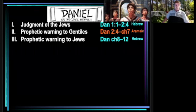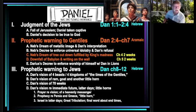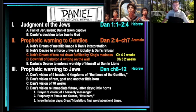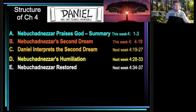We are in the red section — the prophetic warning to the Gentiles — and we are in C and D. We will do chapter 4 for two weeks and chapter 5 for two weeks. To get going this week, let's look at the structure of chapter 4. Chapter 4 also has a structure that helps us as we step through its events. There are five parts, or five sections, in chapter 4.